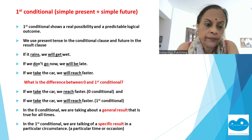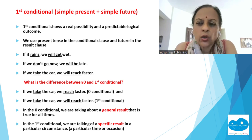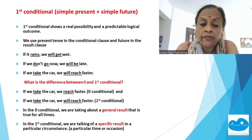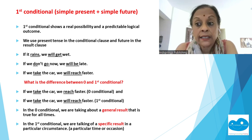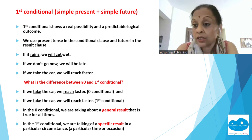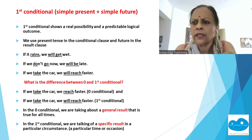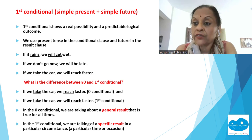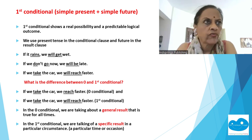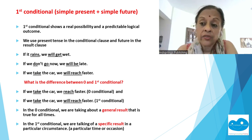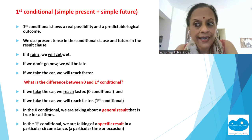What's the difference between zero and first conditional? 'If we take the car, we reach faster' is zero — present and present, a general result true for all times. 'If we take the car, we will reach faster' is first — present and future, talking about today's specific circumstance. The zero is a general result; the first is a specific result. That's the difference.